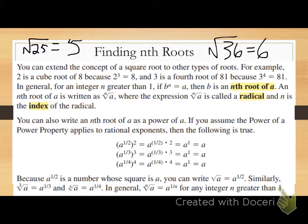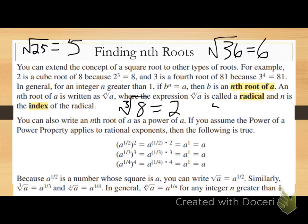We can extend this concept of square roots to other types of roots. For example, two is a cube root of eight because two cubed equals eight. So the cube root of eight asks: what number times itself times itself again gives you that number? What number cubed gives you eight? Two. Same thing with fourth root — what number to the fourth power gives you 81? Three. Three times three times three times three gives you 81, and three is the fourth root of 81 because three to the fourth equals 81.